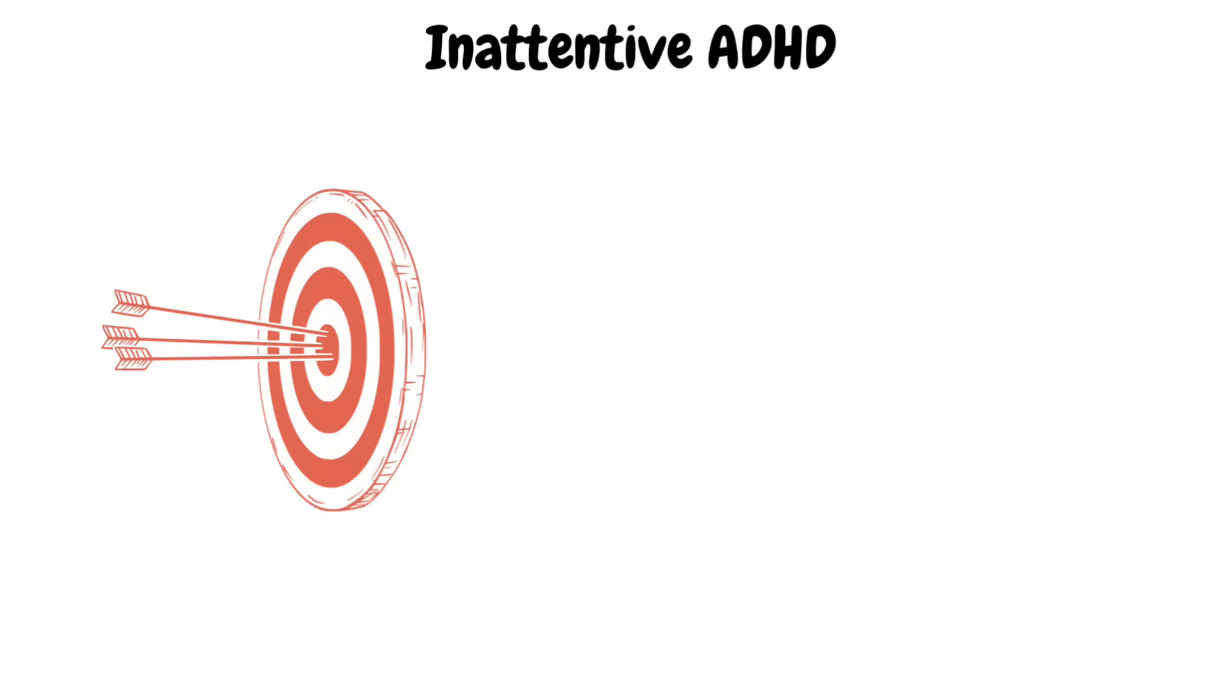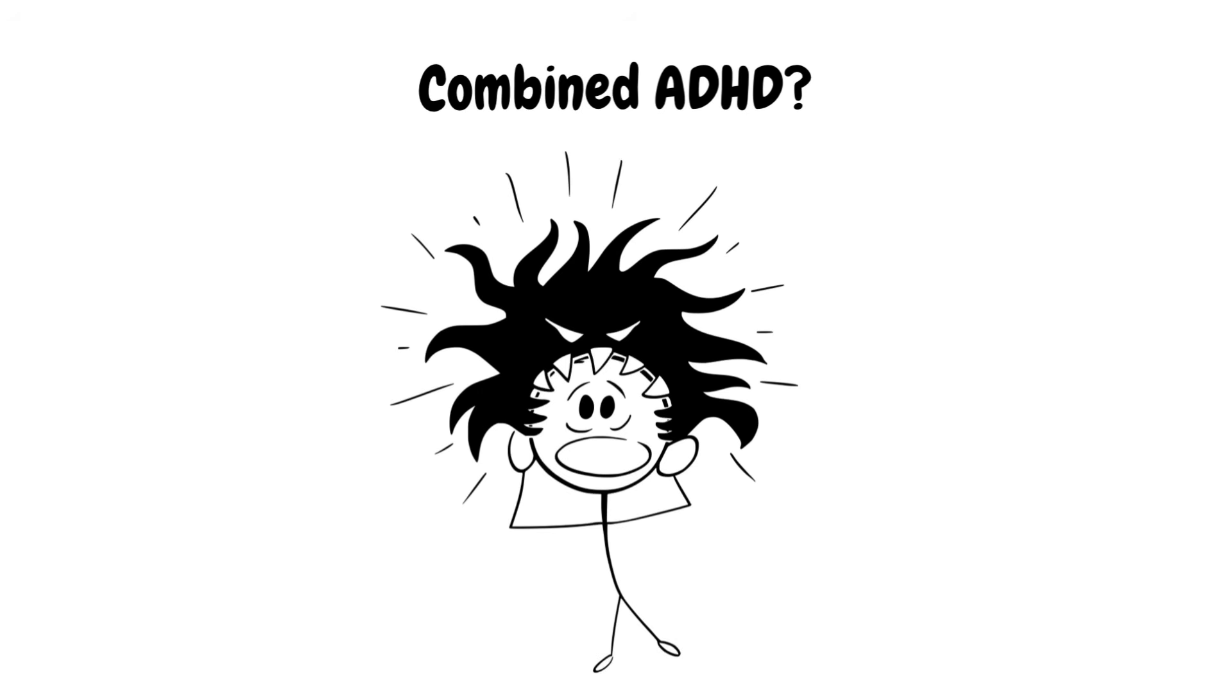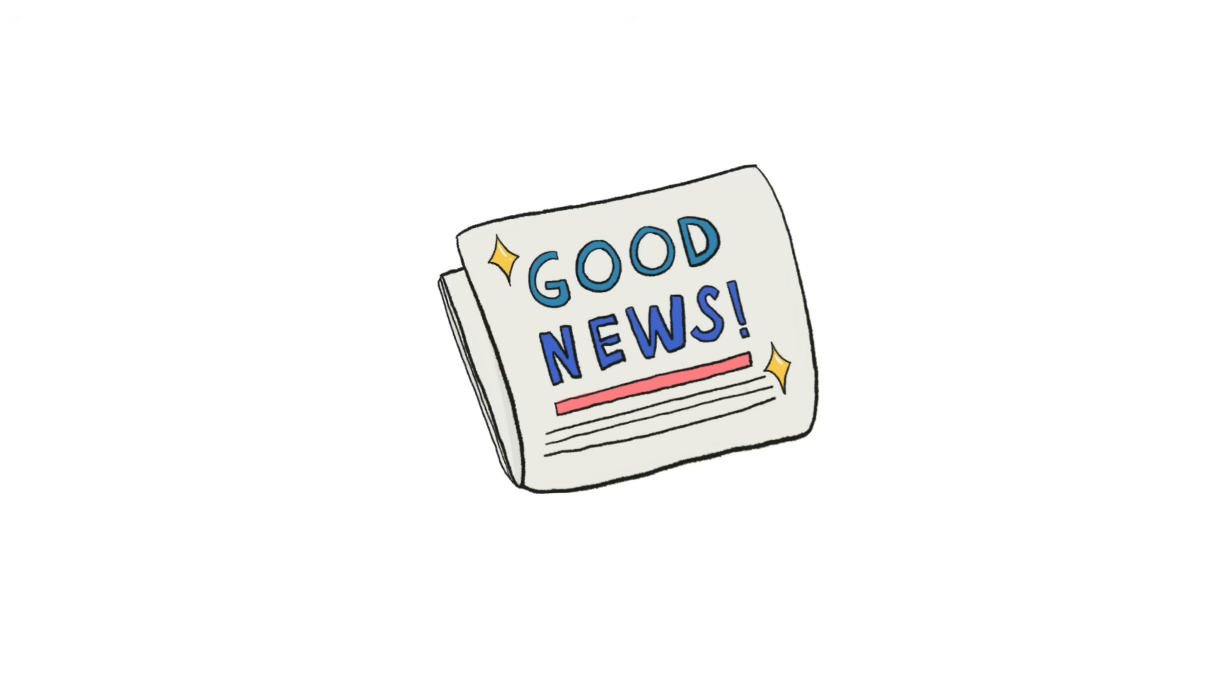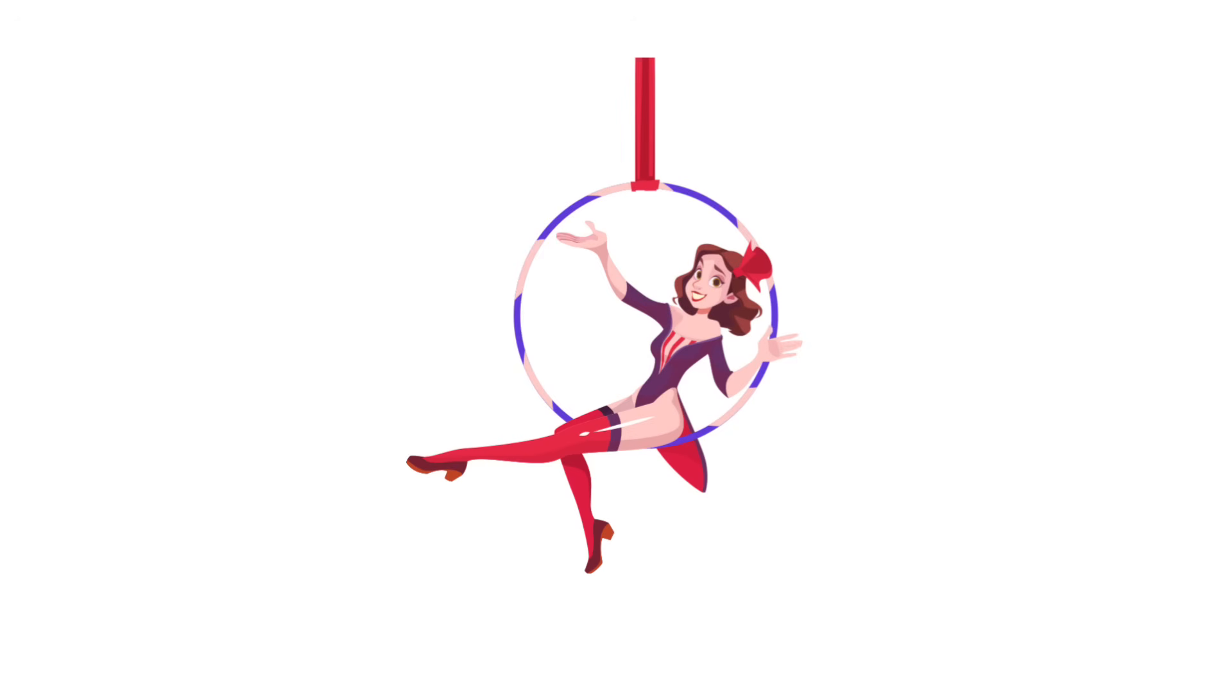There are different types, too. Inattentive ADHD means you struggle to focus or finish tasks. You forget stuff a lot. Hyperactive impulsive ADHD makes it hard to sit still or keep quiet. You talk fast, move constantly, and act without thinking. Combined ADHD, that's the double feature: distracted and hyper all rolled into one very energetic, loud package. Globally, ADHD affects around 129 to 366 million people, from energetic kids to multitasking adults. But the good news? With the right support, like therapy, medication, and structure, ADHD can be managed like a well-trained circus act.